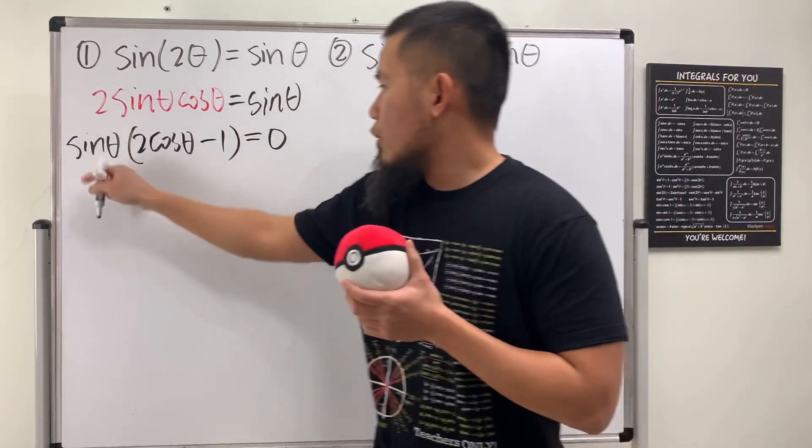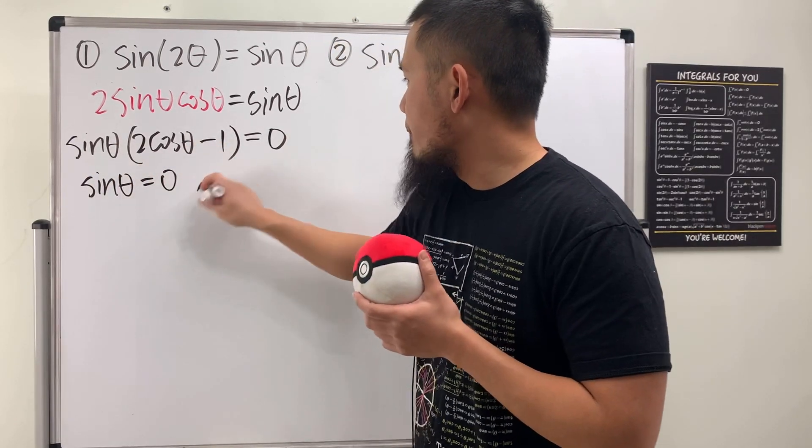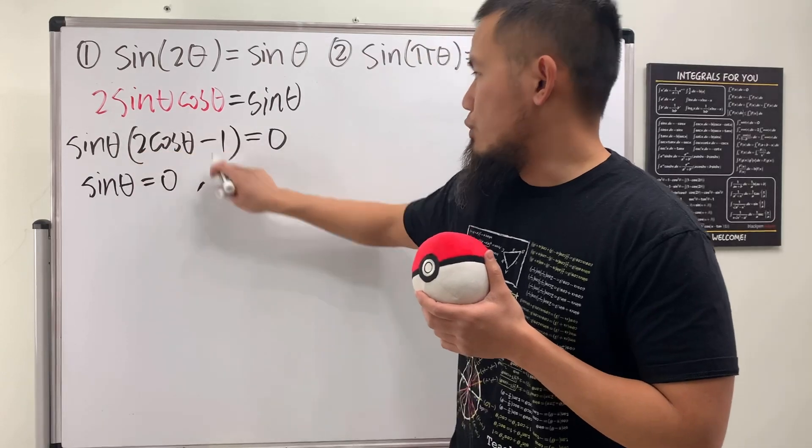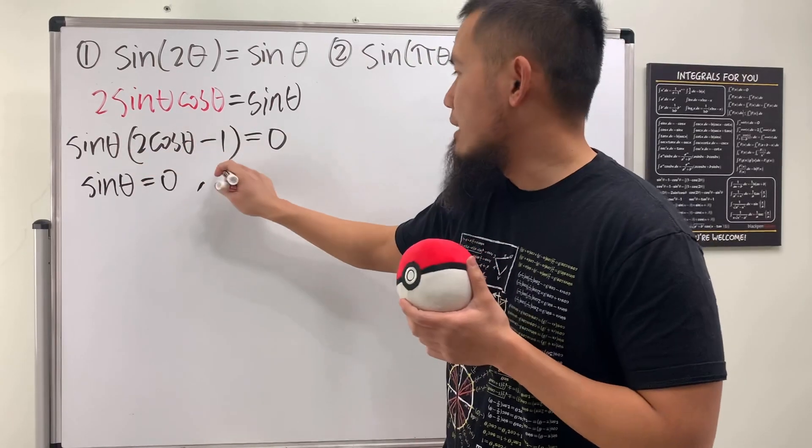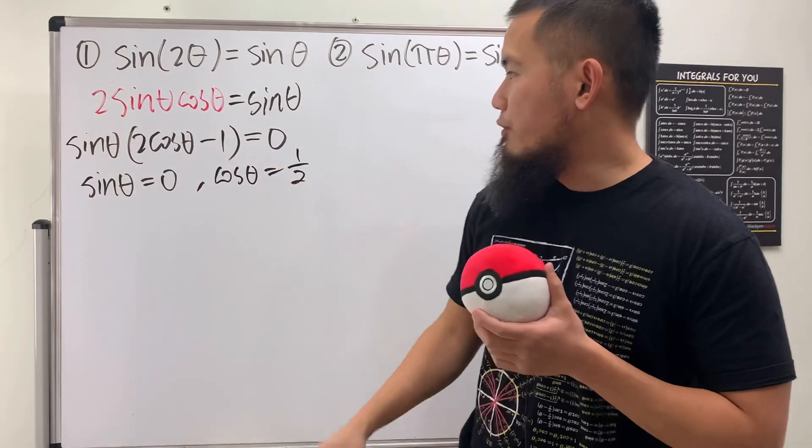And now we have to consider when we have sine theta is equal to 0, or this is equal to 0. In another word, cosine theta is equal to 1 half. And now we just have to solve both of them individually.